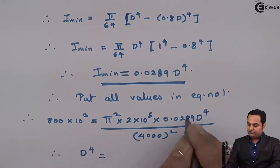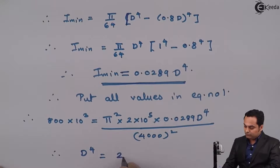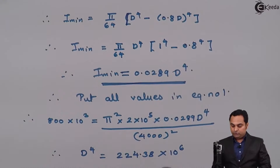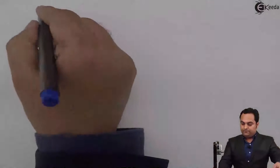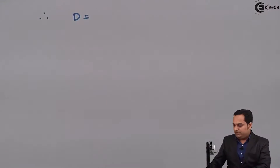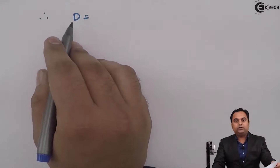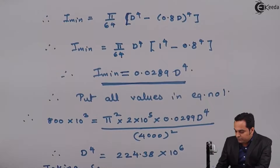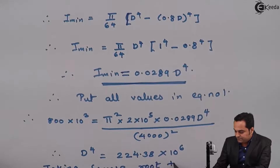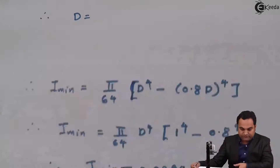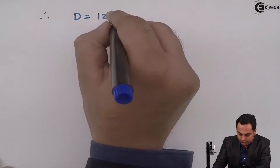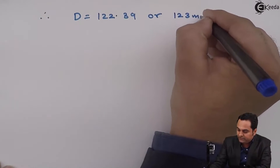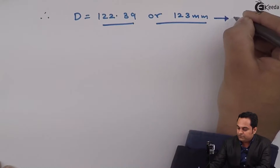After substituting all values in equation one and shifting all terms, D⁴ comes out to be 224.38×10⁶. Taking the square root twice to get D, the answer is 122.39 mm. Since it is a diameter, I will round off the value to 123 mm. This is the external diameter — the first answer.